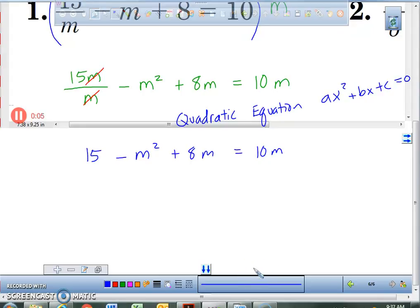Now, there's lots of ways to set this equal to 0. My suggestion, minus 10 on both sides. Okay, so here's what we have. We have 15 minus M squared. 8M minus 10M is a minus 2M, and that is equal to a 0.